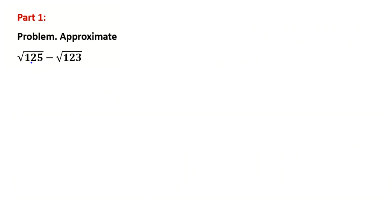Here we want to approximate √(1/5) minus √(1/3). I want to change the minus to plus, and you will see why. This is something similar to rationalizing — when you rationalize, you want to get rid of the square root in the denominator. Here, we want to change it to plus.